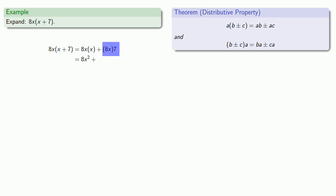This 8x times 7, because multiplication is both commutative and associative, I can rewrite it in any order that I want, and I want to multiply the two numbers together. So this becomes 8 times 7 times x, and I can do that multiplication. I get my final answer: 8x squared plus 56x.